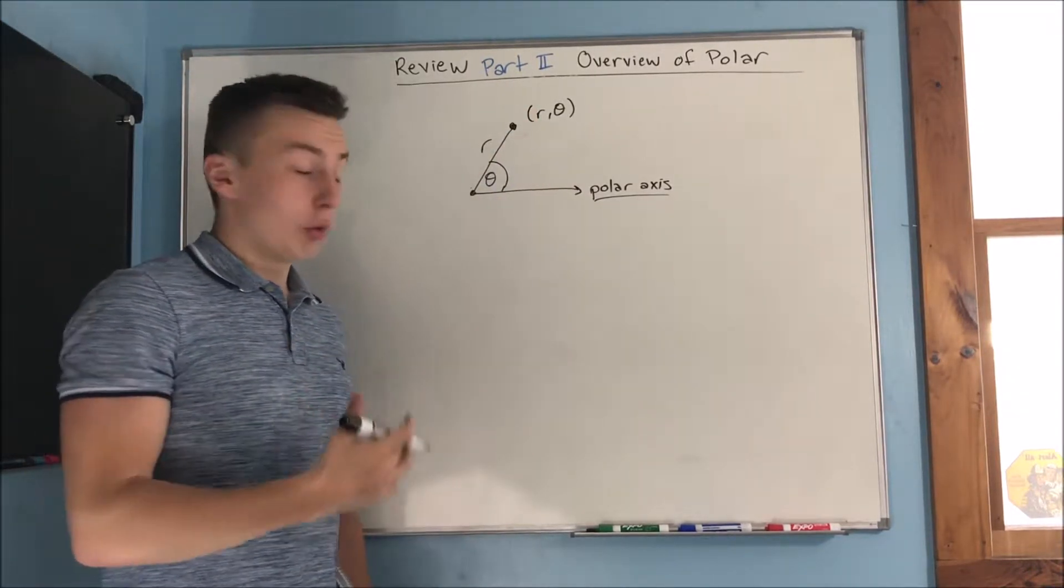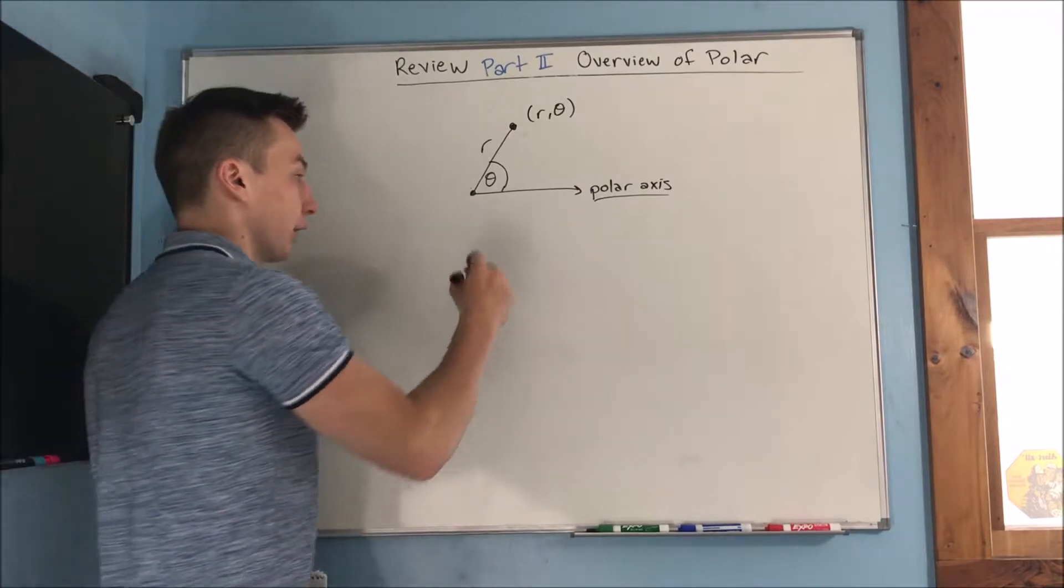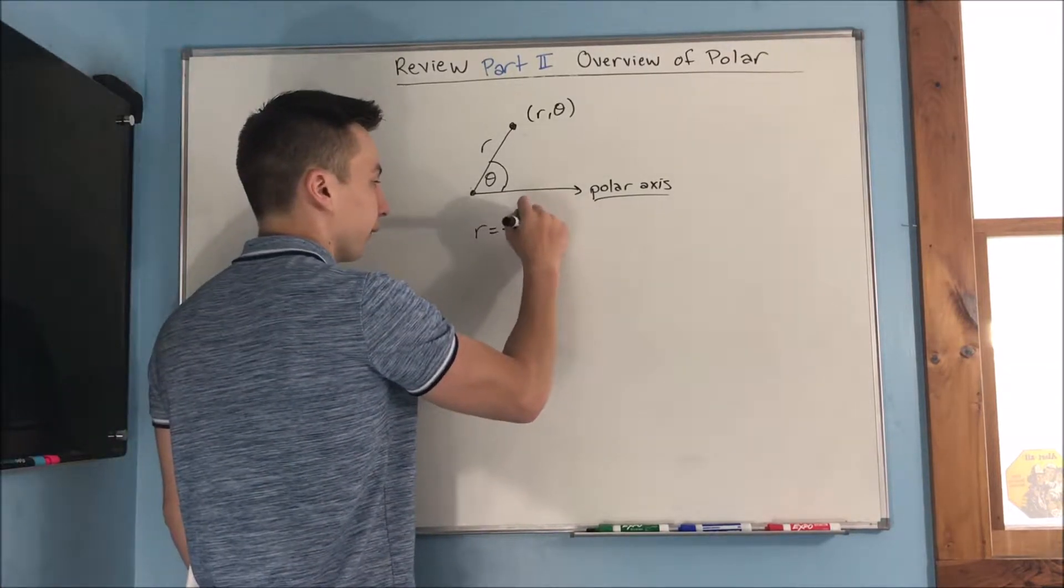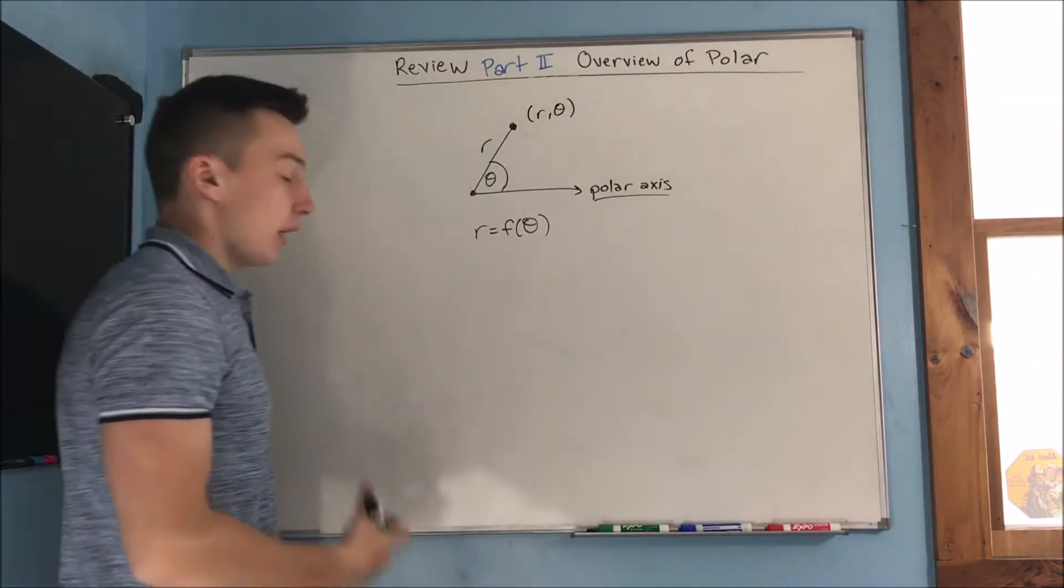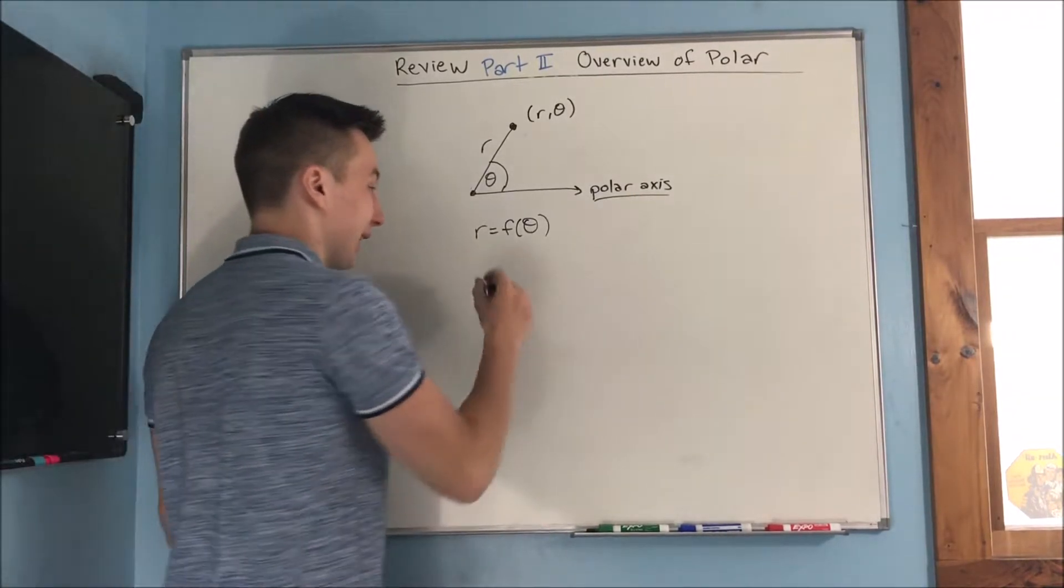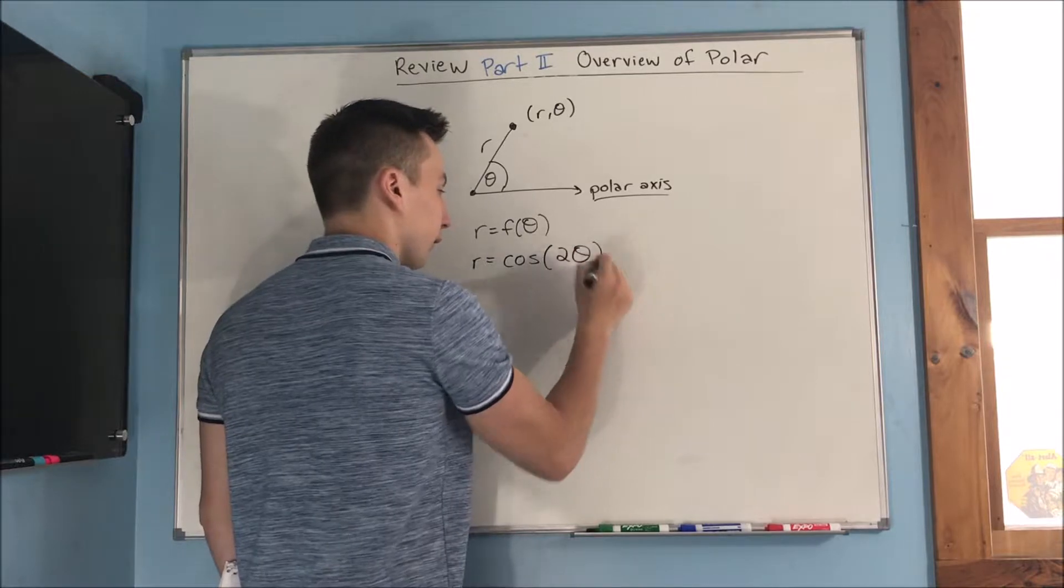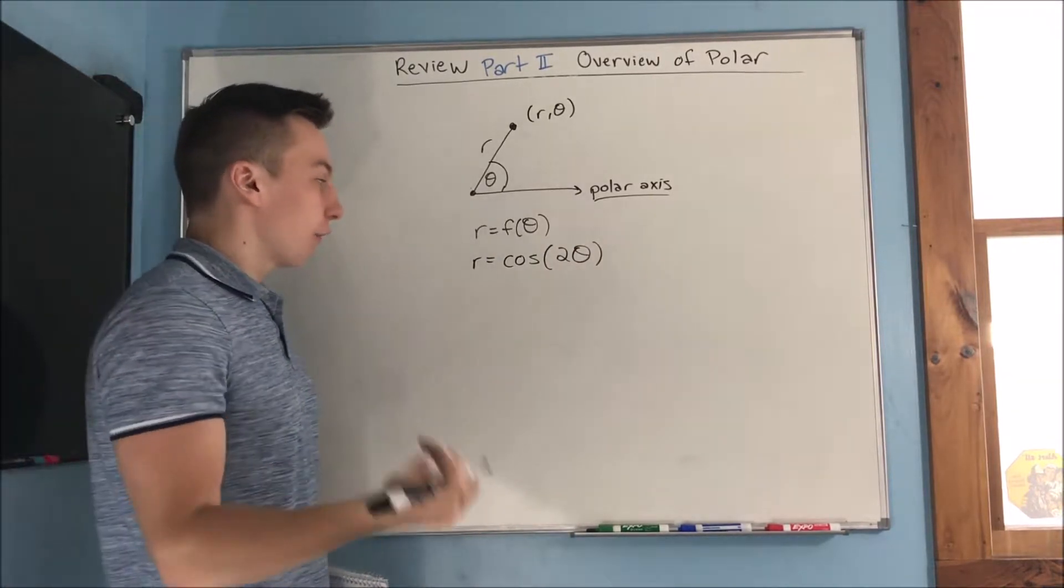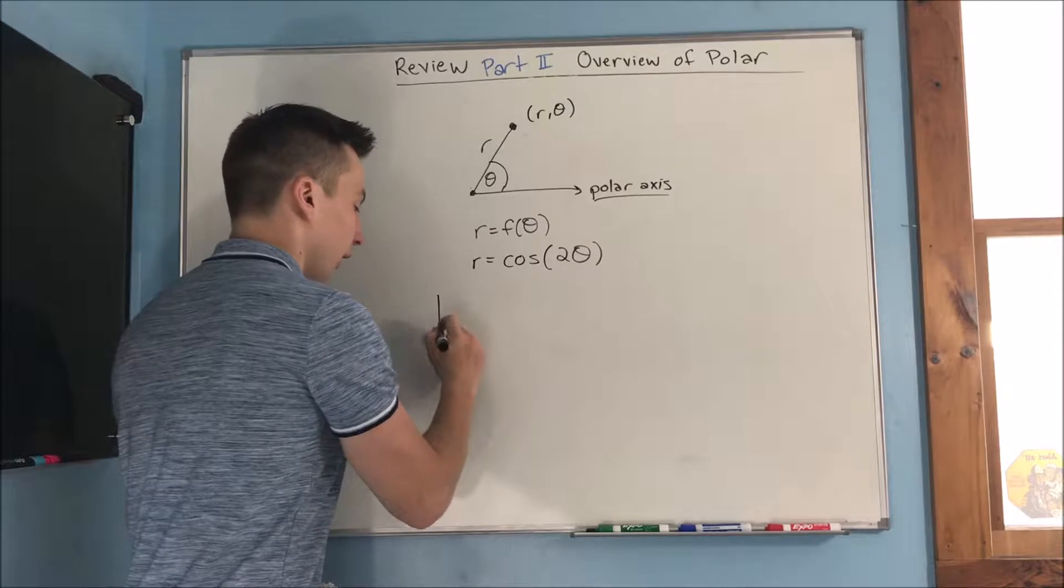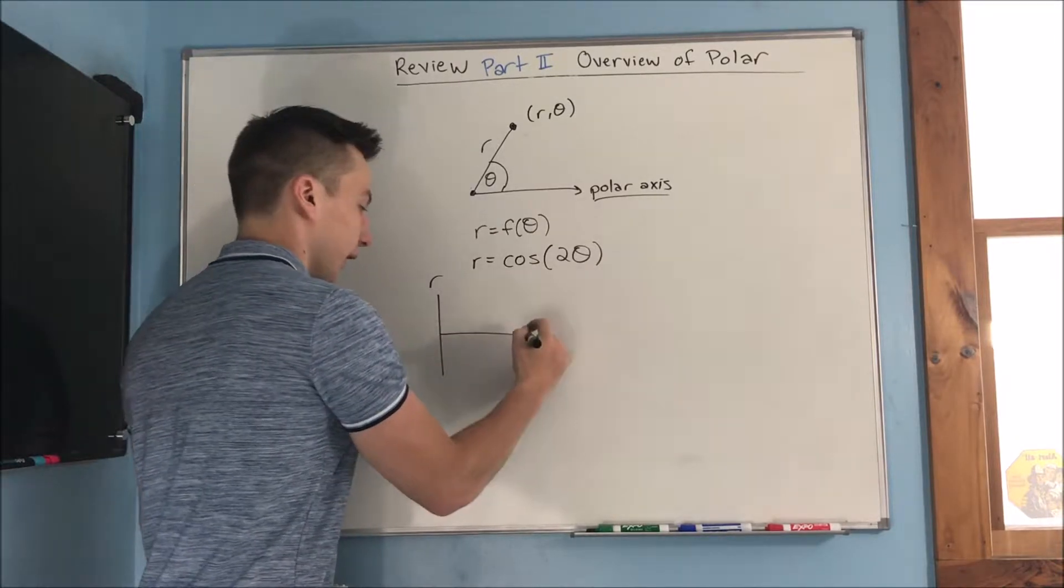Now, we can also graph R as a function of theta. A popular graph you'll see is that R equals cosine of two theta. And how we graphed something like this was first viewing it as if R and theta were Cartesian coordinates.